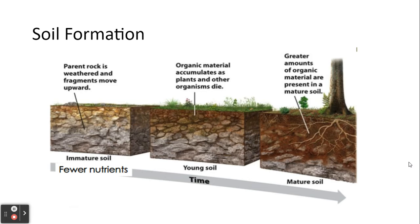Here in the image, all the way to the left, we see much fewer nutrients because we have very immature soil — we still have the parent rock and it's not very weathered. But as wind and rain and other factors play a role, those fragments break down and move upward. We tend to see organic material accumulate. Those plants and other organisms are going to die, and that continues to accumulate to, over time, create mature soil where we see lots of vegetation and roots, and the parent material or bare rock towards the very bottom.